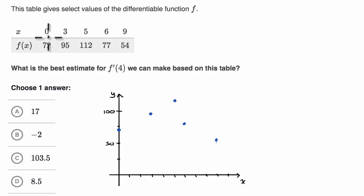When x is zero, f of x is 72. So this is the point 0, 72. This is the point 3 comma 95. Clearly two different scales on the x and y axis. This is the point 5, 112. This is 6, 77. This is 9, 54.